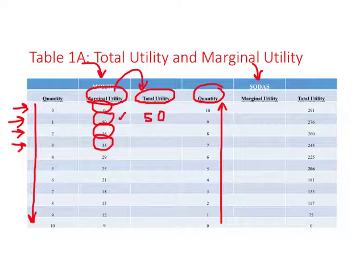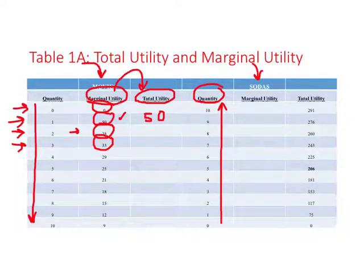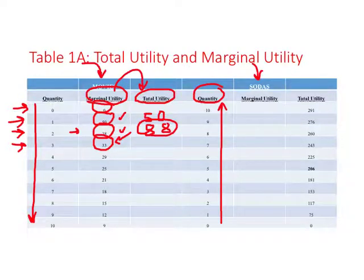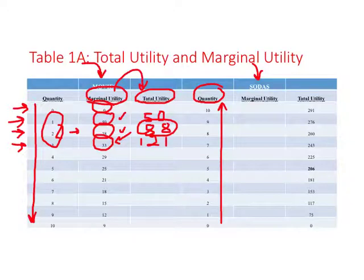From the first movie, this person gets a marginal utility of 50 units, so the total utility after watching one movie is 50. From the second movie the marginal utility is 38, so total utility after two movies is 50 plus 38 = 88. For three movies, the total utility from the first two is 88, and the third movie adds a marginal utility of 33, giving a total utility of 88 plus 33 = 121. In this way we can complete the total utility column.